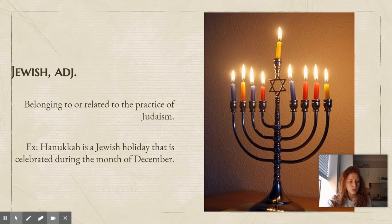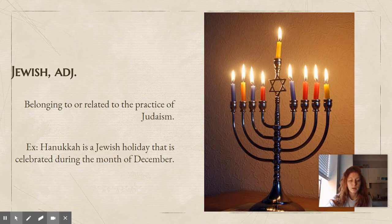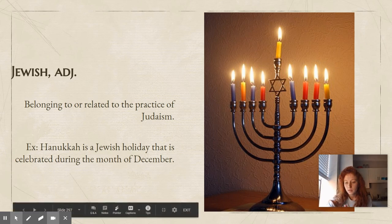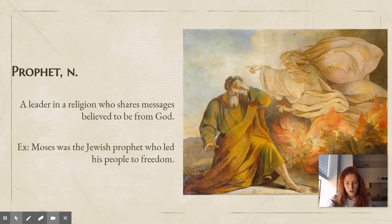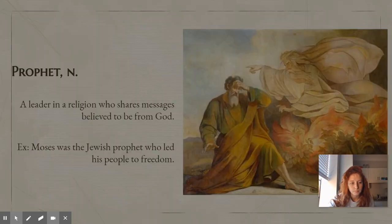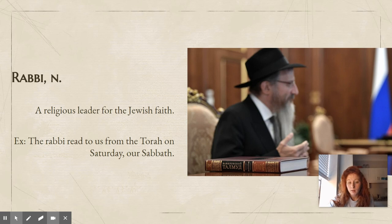Jewish as an adjective means belonging to or related to the practice of Judaism, which is one of the religions that we learned about yesterday. Hanukkah is a Jewish holiday that is celebrated during the month of December, and this is the menorah that they use when they celebrate Hanukkah. Prophet is a noun, and a prophet is a leader in a religion who shares messages believed to be from God. Moses was the Jewish prophet who led his people to freedom. A rabbi is a noun — a religious leader for the Jewish faith. The rabbi read to us from the Torah on Saturday, our Sabbath.